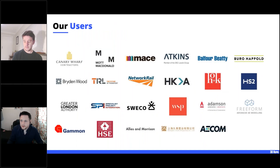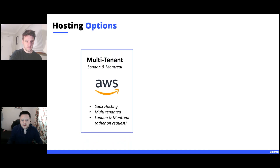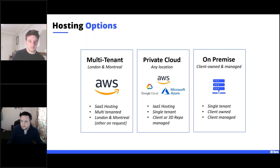Our users are a mixed bag across tier-one contractors, multi-disciplinary consultants, and major construction clients. 3D Repo is very security-conscious with ISO 9001 and 27001 certifications, plus Cyber Essentials. All data is encrypted at rest and in transit. Everything shown today is hosted on AWS in London; there's a separate server set in Montreal for North America. We can also deploy on other major cloud providers or on-premise with different licensing models.